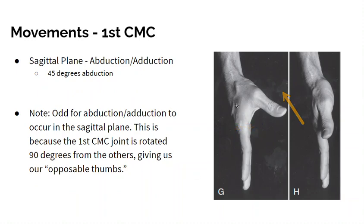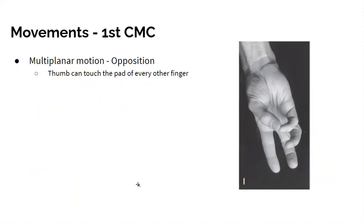In the sagittal plane, you have abduction away from the midline and adduction toward the midline. Then you have this combo multiplanar motion called opposition, so that your thumb can touch the pad of every other finger. Apparently our cats can't do this, so that separates us from them.